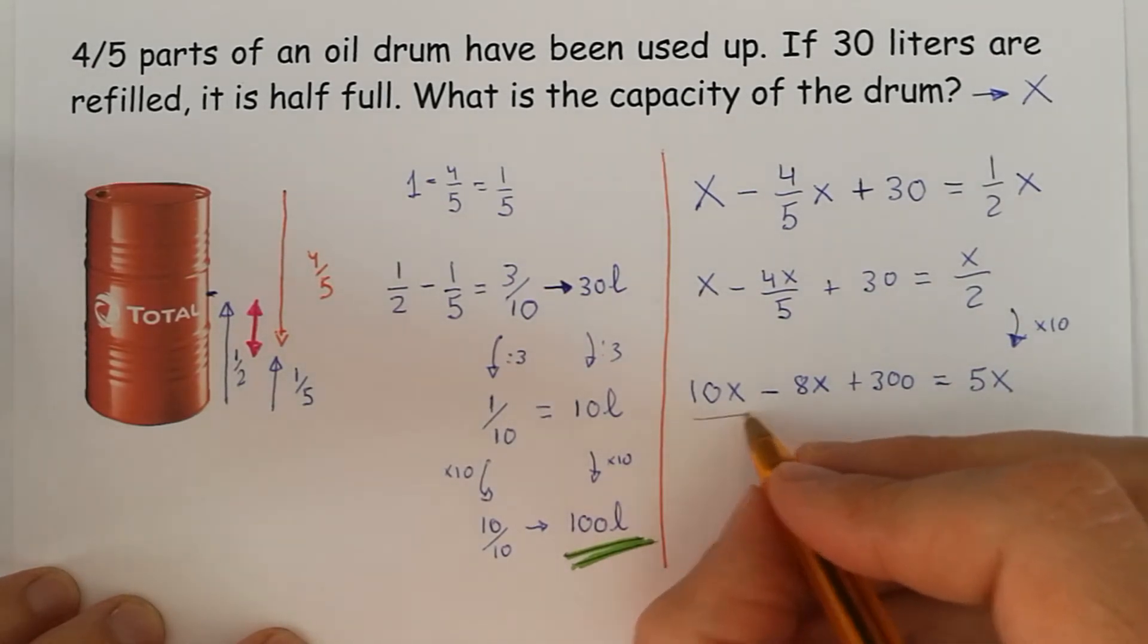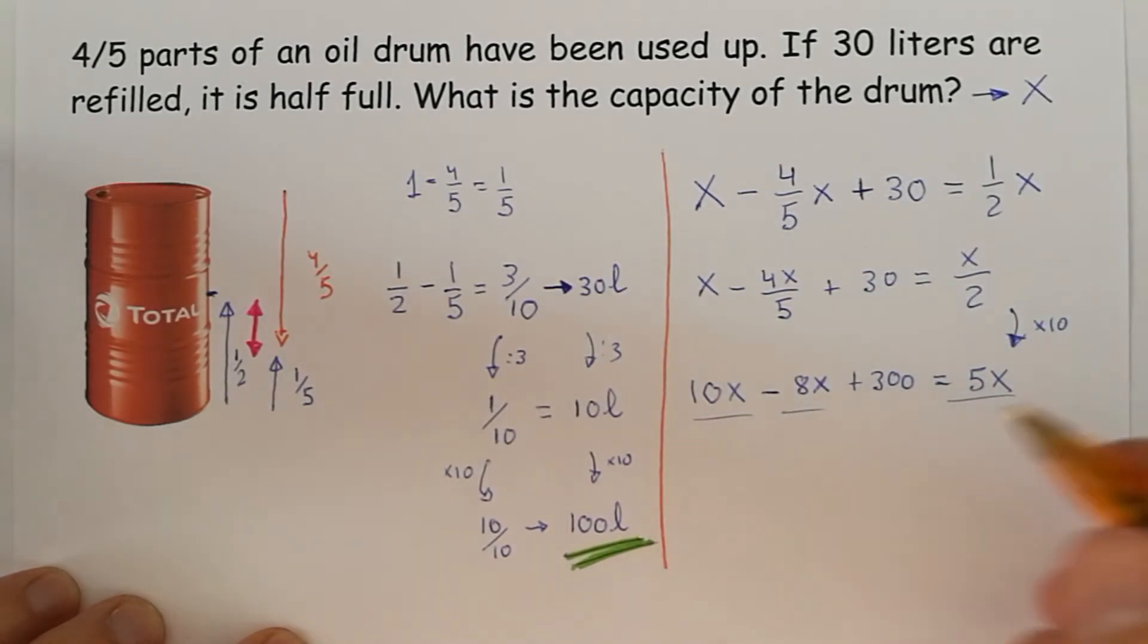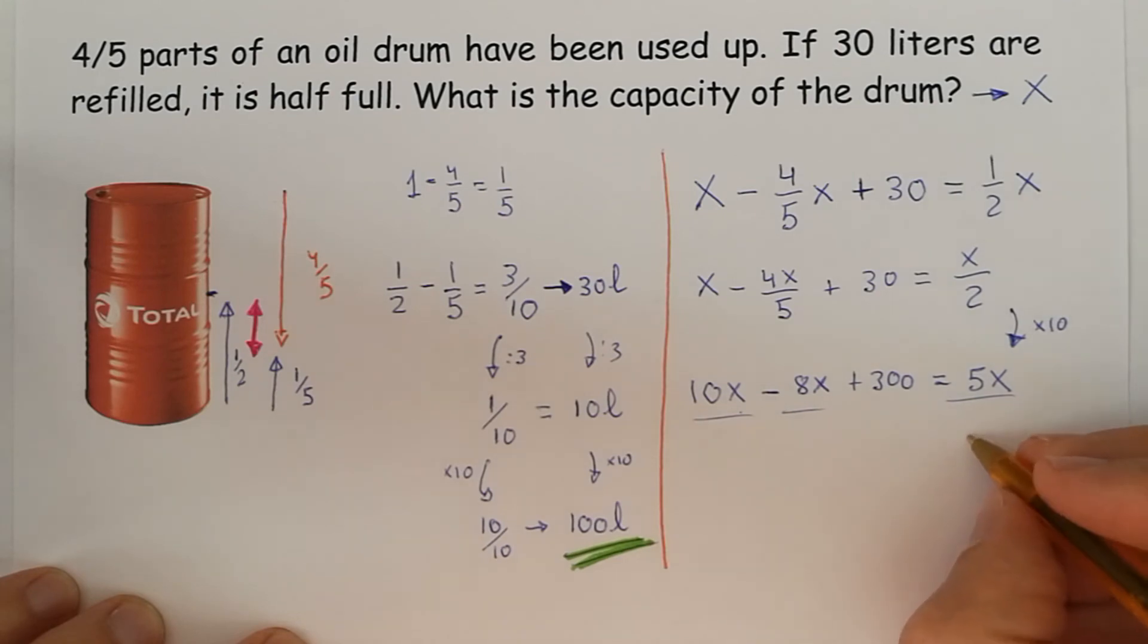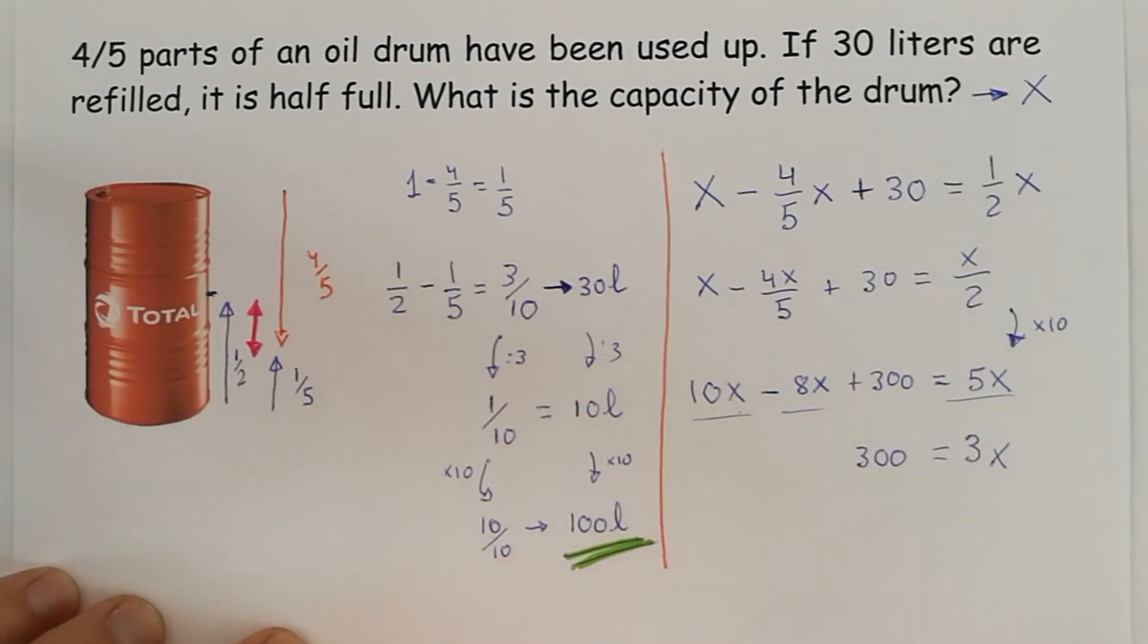Now, we put every term with X in one side, so here is 2. If we take away 2 in both sides, we're going to get 3X. And the numbers are just 300. If we divide in both sides of the equation by 3, we're going to get 100 on the left and X on the right.